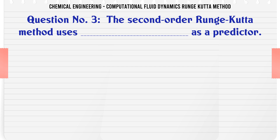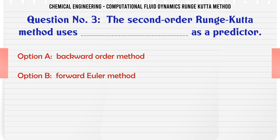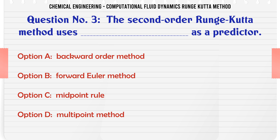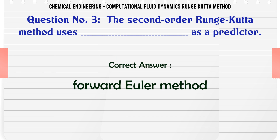The 2nd order Runge-Kutta method uses as a predictor: A: backward order method. B: forward Euler method. C: midpoint rule. D: multipoint method. The correct answer is: forward Euler method.